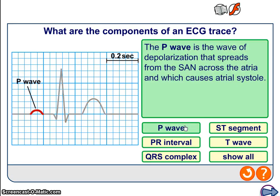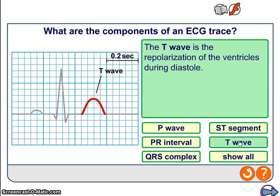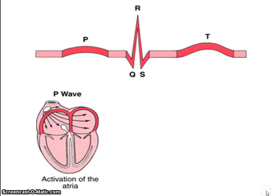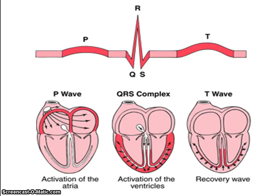Here they are again. The P wave: produced by electrical activity in the atria. The QRS complex: produced by electrical activity in the ventricles. And the T wave: produced by relaxation of the ventricles.